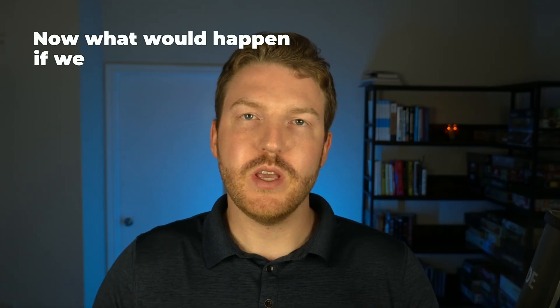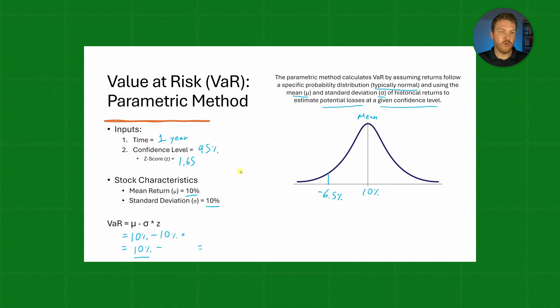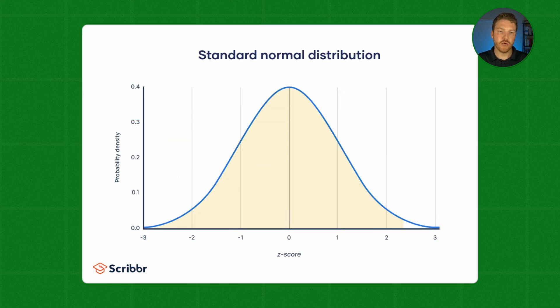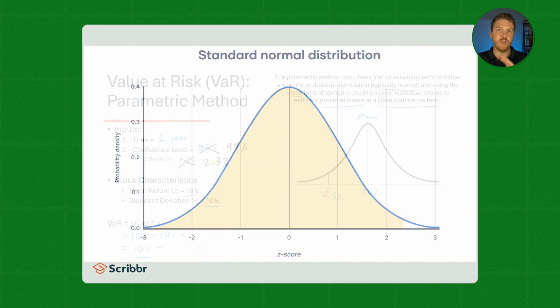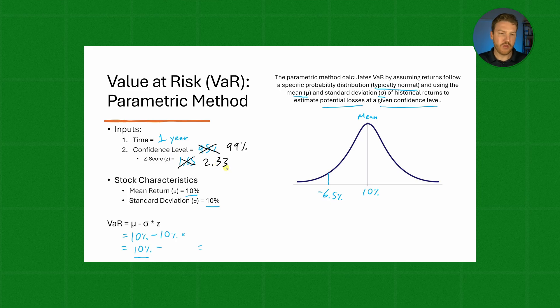What would happen if we increased our confidence level, meaning we moved further out into the tail? Instead of a 95% confidence level, let's use a 99% confidence level. That would increase our Z-score from 1.65 to 2.33. You can check any standard one-tailed Z-score table for that number.